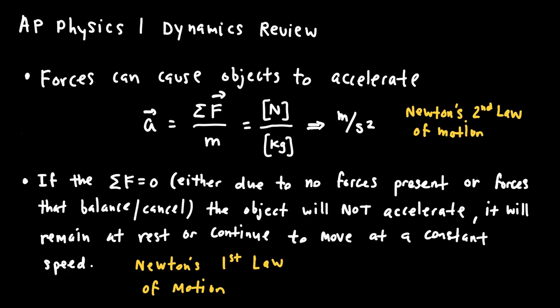The equation is written below. We can see that if the net force applied to an object increases, then the acceleration will also increase. And for a given amount of force, if the mass of an object increases, then the acceleration would decrease. We write 'net force' because there could be one or many forces acting on an object. Force is a vector — it has not only a magnitude but a direction — so acceleration is also a vector, with arrows written above both variables. Forces are measured in newtons, mass in kilograms, and acceleration in meters per second squared.